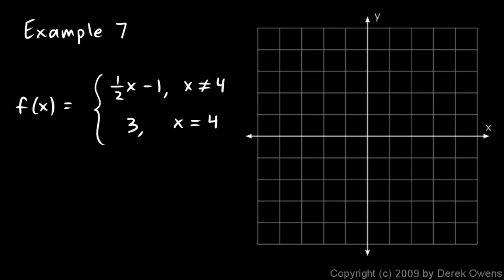Here's another example of a piecewise function with a pretty interesting graph. There are two pieces: the first piece says we use the expression one-half x minus one to compute the value of the function whenever x is not equal to four. That one value of four is the key value — when x equals four, the function simply has a value of three.